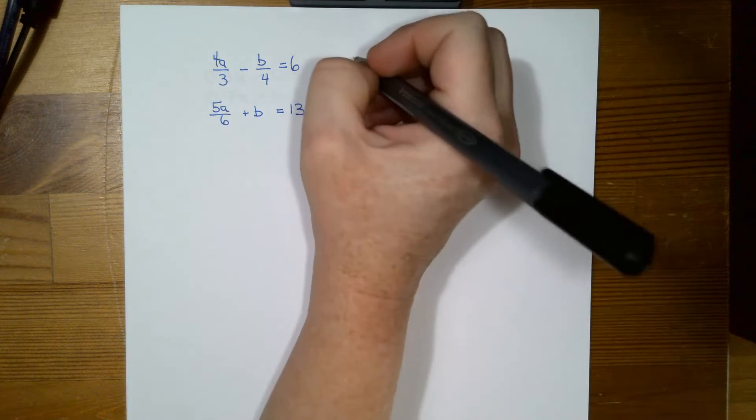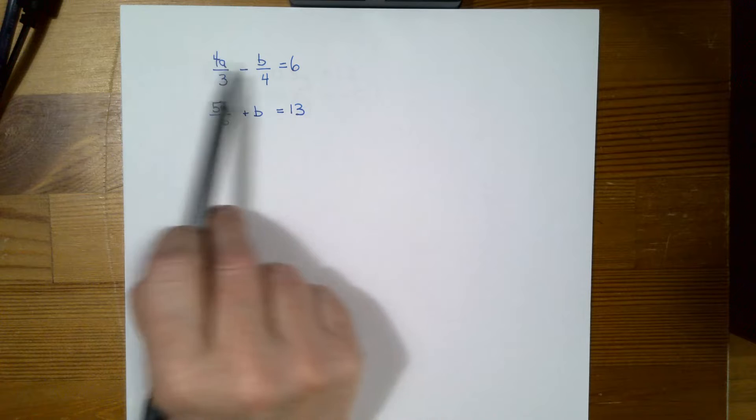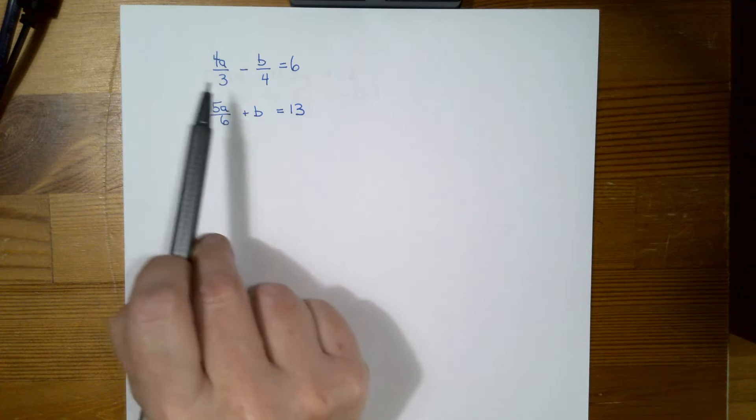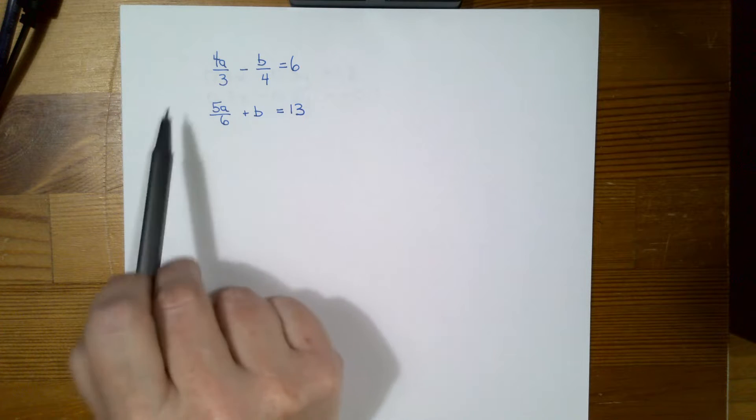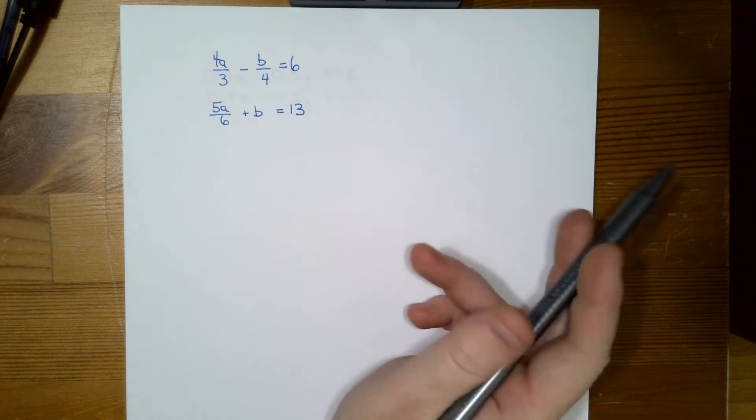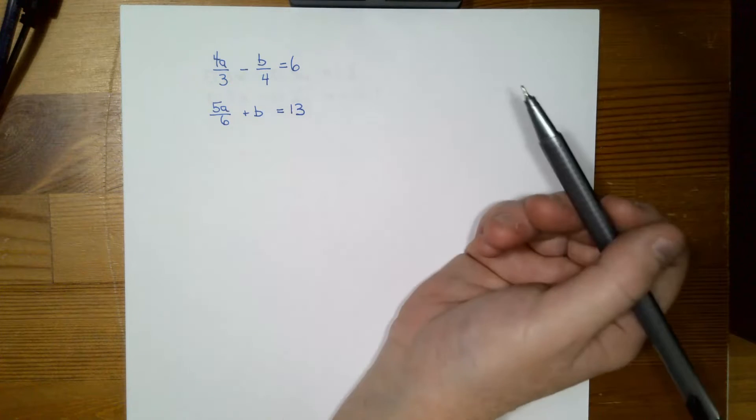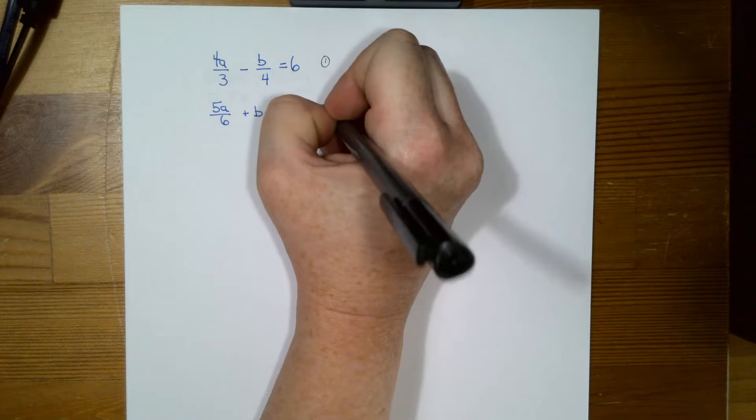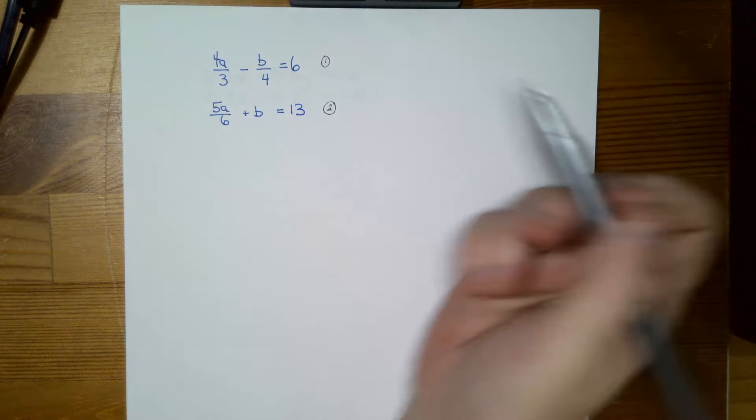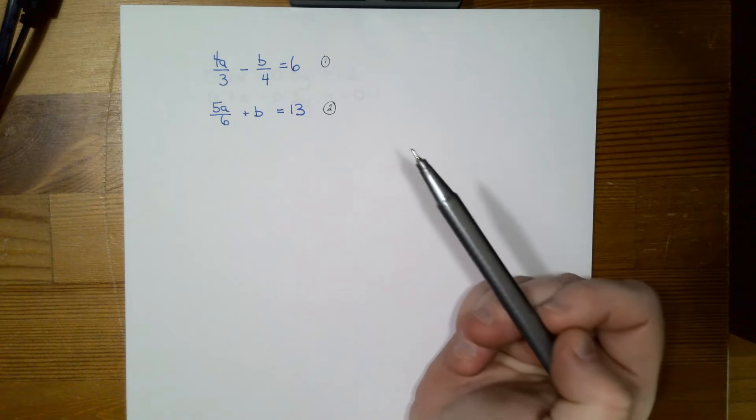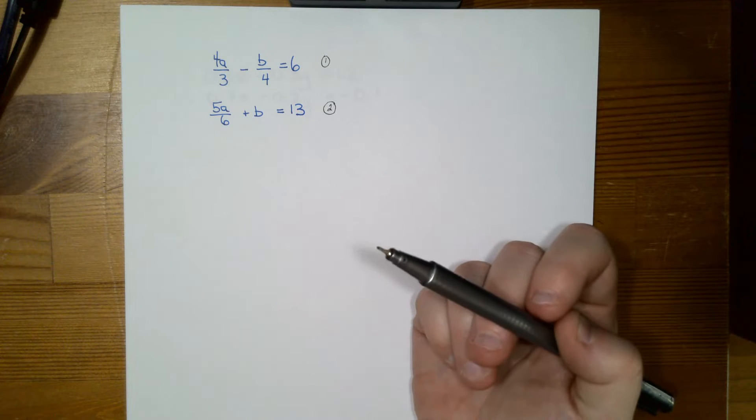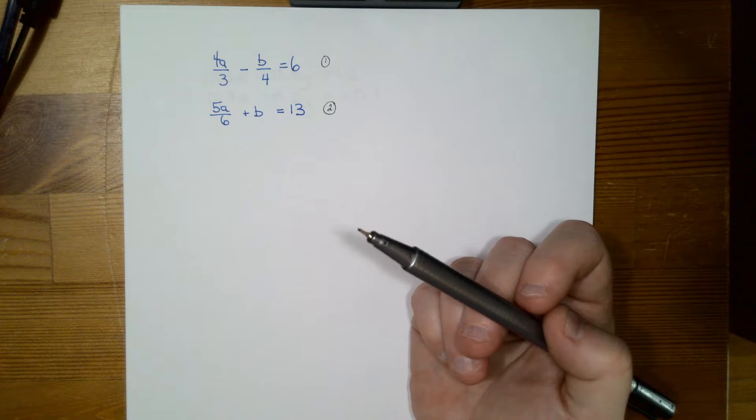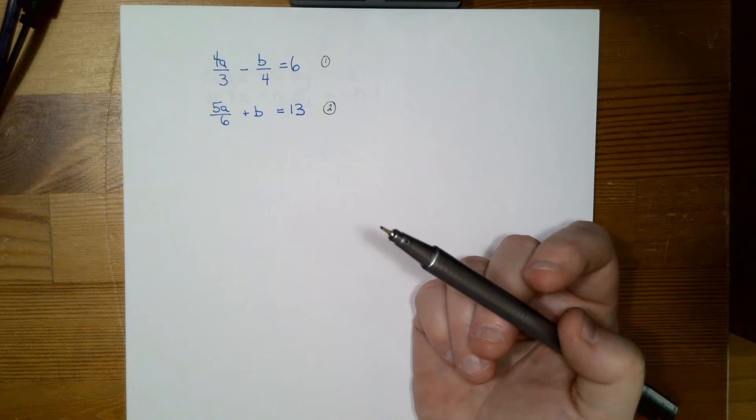So I can multiply this by anything as we saw earlier and I can multiply this equation by anything as we've seen all through elimination because I'm coming up with equivalent expressions. So if I label this one 1 and this one 2, in order to get started, I actually want to clear the fractions because I find that it's much easier to work with two equations that don't have fractions.